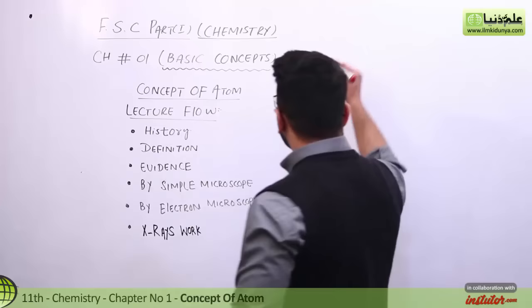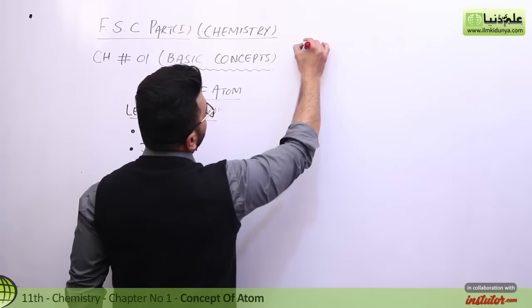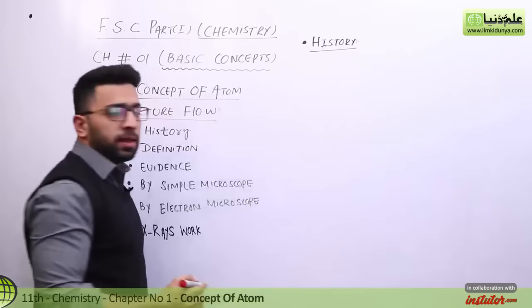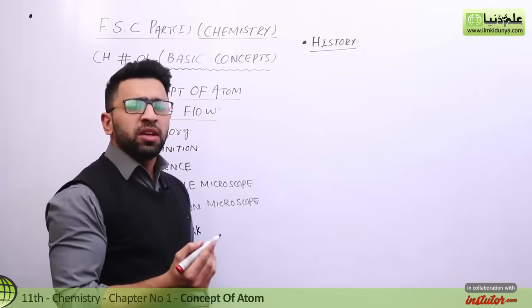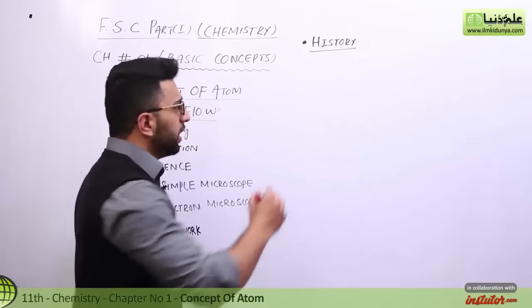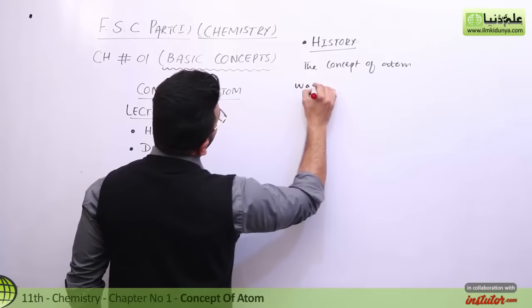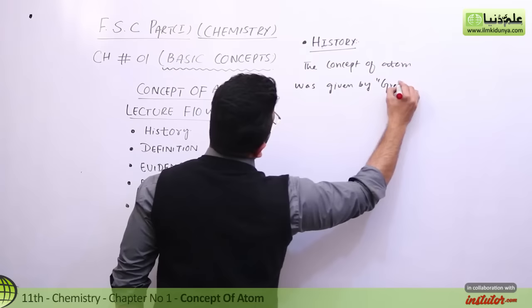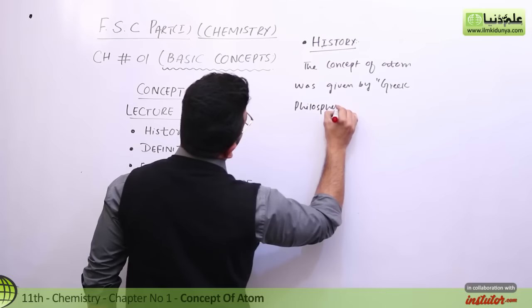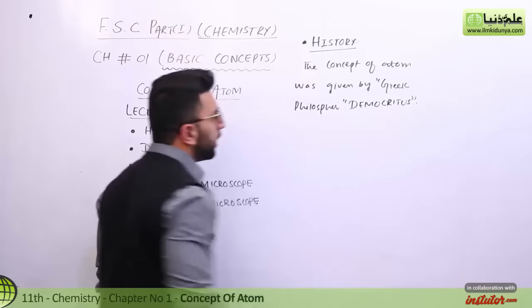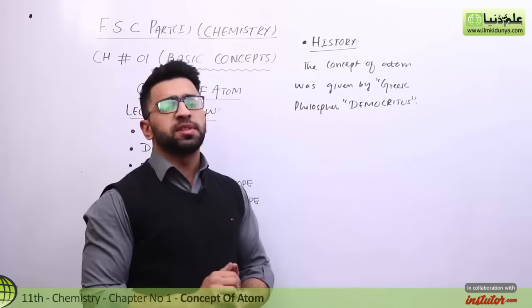The first point is the history of atom. The concept of atom comes from Greek philosophy. The concept of atom was given by a Greek philosopher, and that Greek philosopher is Democritus.